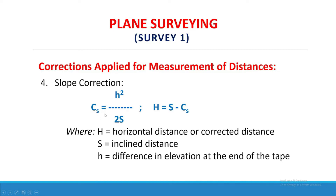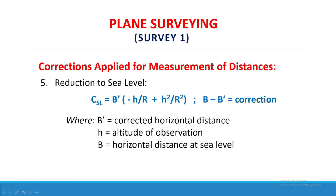Number four: slope correction. C sub S equals H squared all over 2S, and H equals S minus C sub S, where H is the horizontal (corrected) distance, S is the inclined distance, and H is the difference in elevation at the ends of the tape. Last: reduction to sea level. C sub SL equals B prime multiplied by (negative H over R plus H squared over R squared), where B minus B prime is the correction.